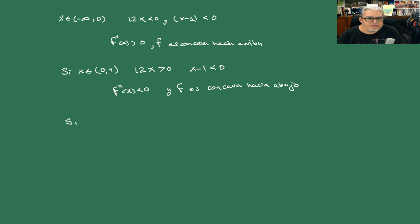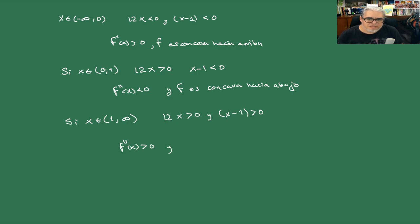Luego, si x se pasa de 1, entonces 12x > 0 y x - 1 también es mayor que 0, por lo tanto f''(x) > 0 y f es cóncava hacia arriba.